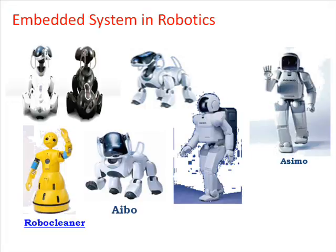RoboCleaner — a fully automatic cleaning robot. Simply plug in the charger station, switch on, set the cleaning time and leave the rest to the RoboCleaner. It cleans fully automatically and negotiates obstacles such as cables and wires. Four optical sensors enable it to identify stairs reliably, with a dirt recognition sensor to sweep and vacuum automatically. Guided by an infrared beam, it returns to the base station automatically, and contact sensors guide it around all obstacles.